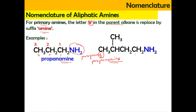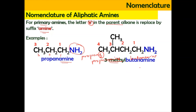If you have a structure where the carbon attached nearest to the NH2 takes number one — so one, two, three, four — with four carbons, the name is going to be butanamine. And at carbon number three, it is attached with a methyl group, so the name is going to be 3-methylbutanamine.